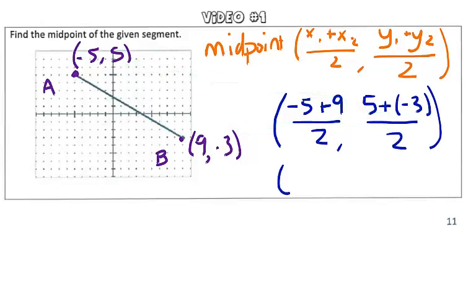We're going to simplify. Negative 5 plus 9 is 4, divided by 2 is 2. And 5 plus negative 3 is 2, divided by 2 is 1. So, our midpoint is 2, 1.